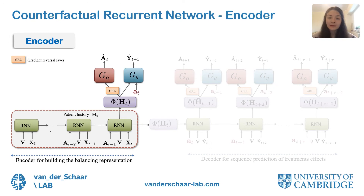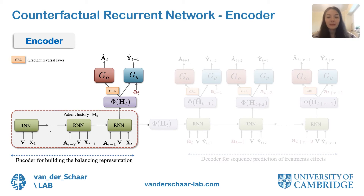The encoder network part of the counterfactual recurrent network uses a recurrent neural network with LSTM units to process the history of treatments, covariates, and baseline features to build treatment-invariant representations through domain adversarial training. The encoder network aims to maximize the loss of the treatment classifier G_A and minimize the loss of the outcome predictor G_Y. In this way, the balanced representation phi is not predictive of the assigned treatment A_T, but is discriminative enough to estimate the outcome Y_{t+1}. The encoder network can also be used to estimate one-step-ahead patient outcomes.